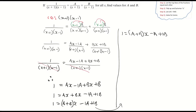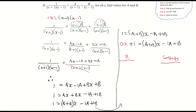Rewriting the left hand side, I'm bringing in 0x because I don't have any x's on the left, but I'm bringing it in so I can match it up with the x's on the right. So: 0x plus 1 is equal to (a plus b) times x, minus 1a plus 1b. Looking at my x terms: 0x equals (a plus b) times x, so cancelling the x's gives 0 equals a plus b, therefore a equals minus b — I've just subtracted b from both sides.